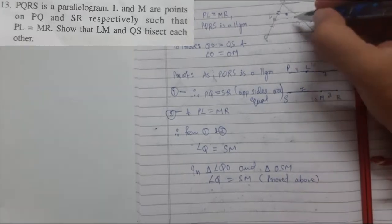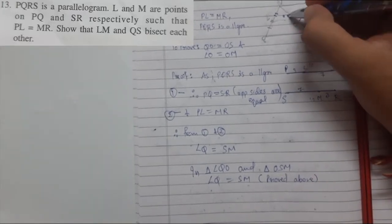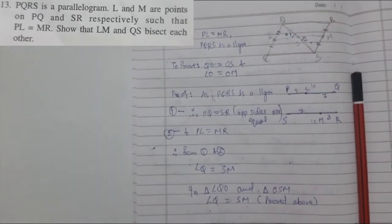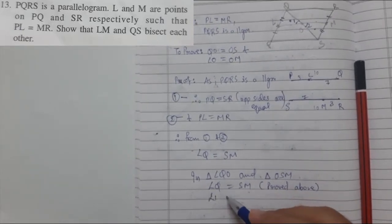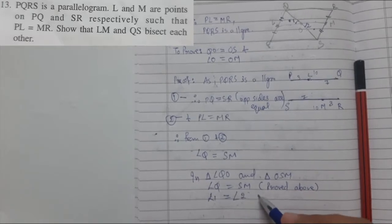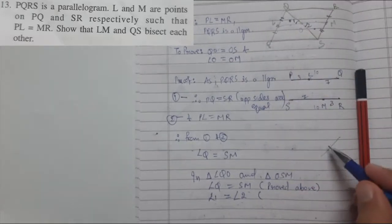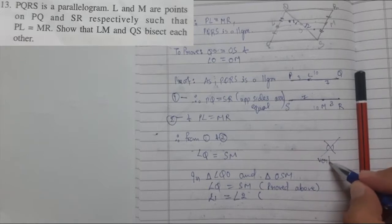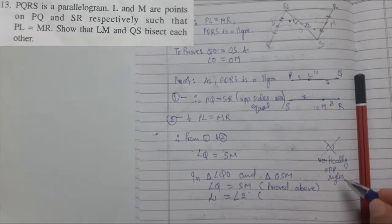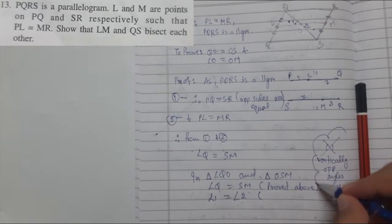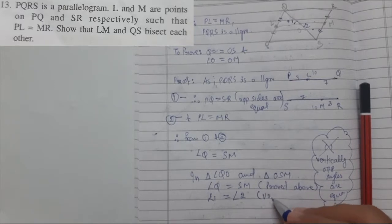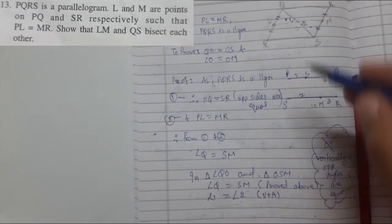The second thing: angle 1 equals angle 2. Whenever there is a cross-shaped figure, the vertically opposite angles are always equal. So by the vertically opposite angles property, angle 1 equals angle 2.